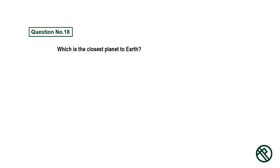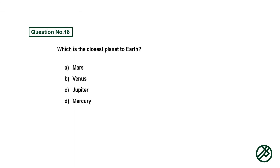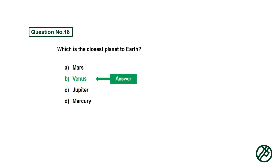Question number eighteen: Which is the closest planet to earth? Option A: Mars, option B: Venus, option C: Jupiter, option D: Mercury. Answer is option B: Venus.